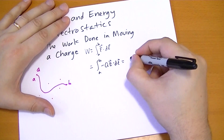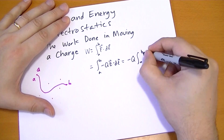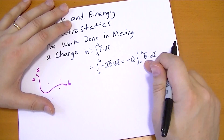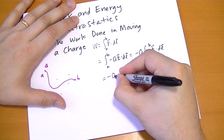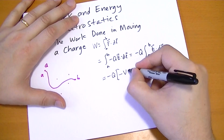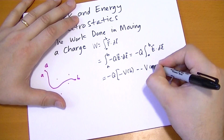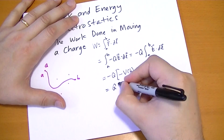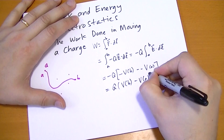We can pull out that minus Q, because it's constant — we're not changing the charge as we go through the field. Now we have this integral, which you should recognize as the potential — well, minus the potential actually — so we have V of B, then minus minus V of A. Multiplying through, you get Q times V(B) minus V(A).